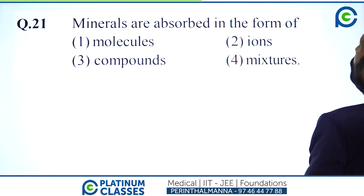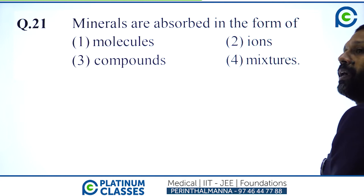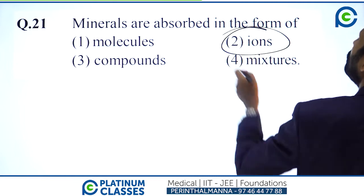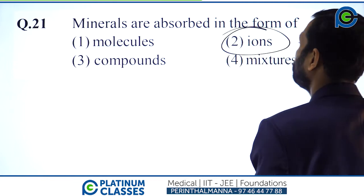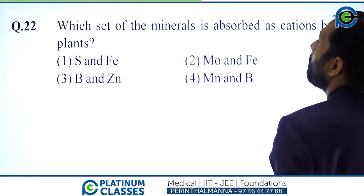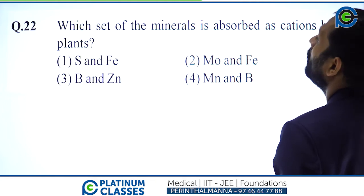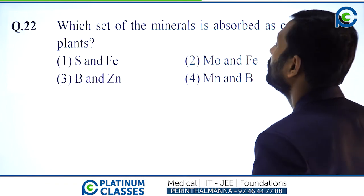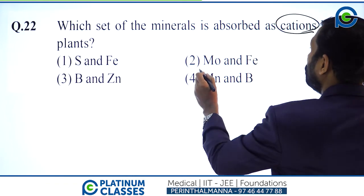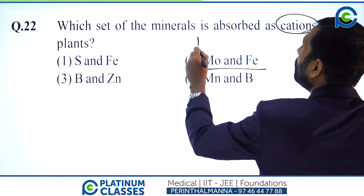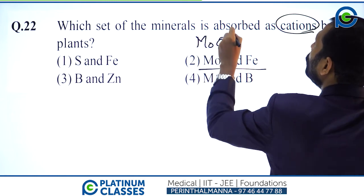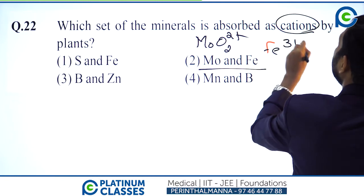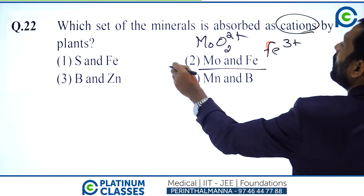Minerals are absorbed by plants in the form of charged ions. Which set of minerals is absorbed as cations by plants? Cations are positively charged ions. Sulfur and molybdenum are absorbed as anions; iron is absorbed as Fe3+ (ferric ion) — a cation. Option 2 is the answer.